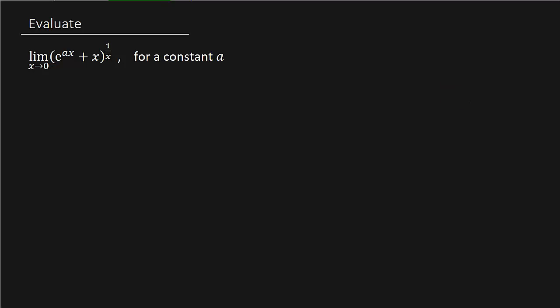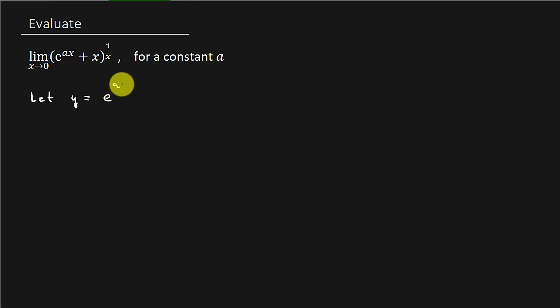So how do we go about doing this? I've got several videos with problems similar to this — this is just another one. So let's take a look at it. What we're going to do is start out and say let Y equal E to the AX plus X, all of that raised to the 1 over X power.